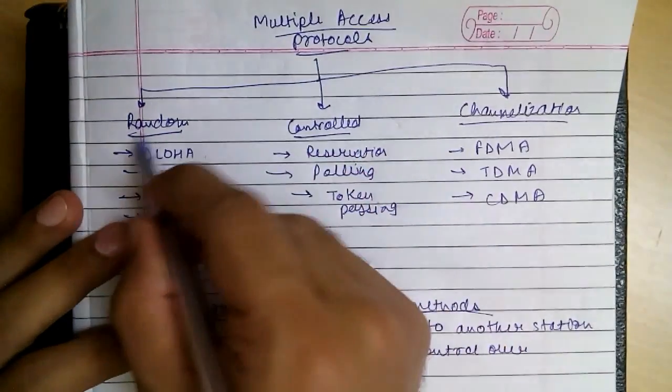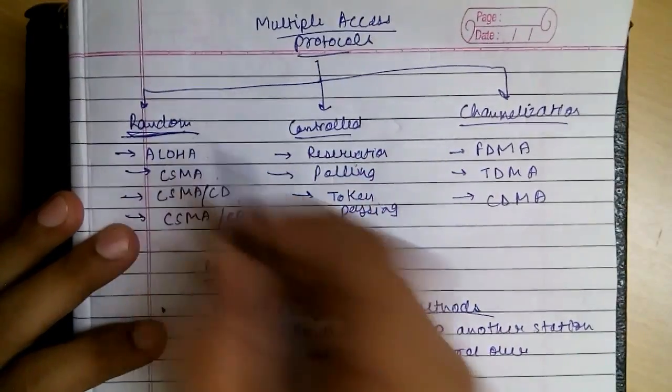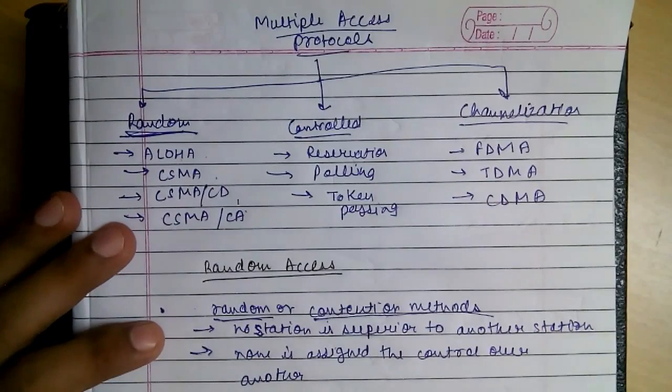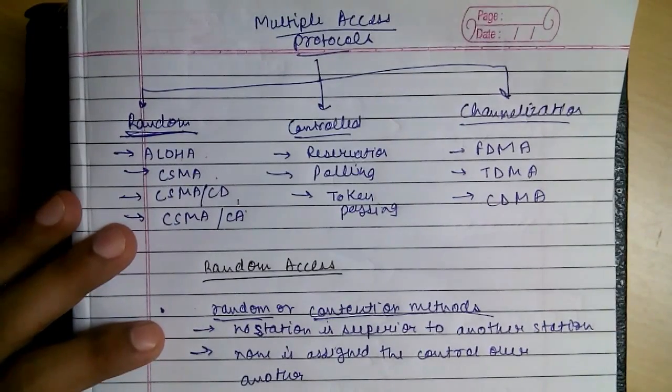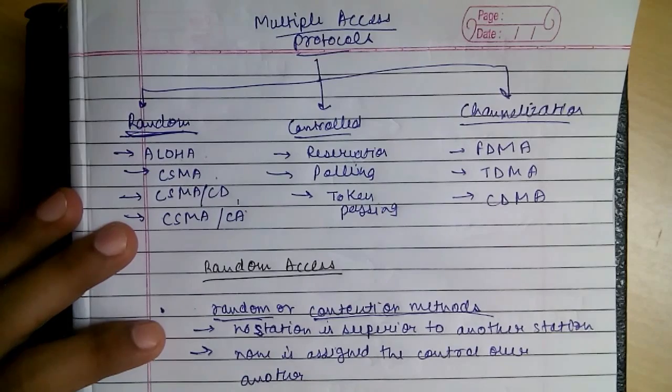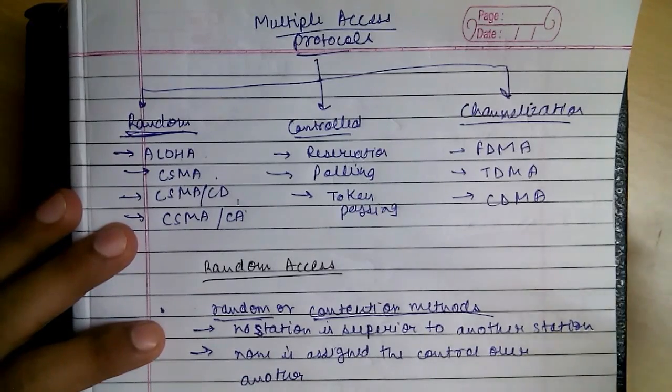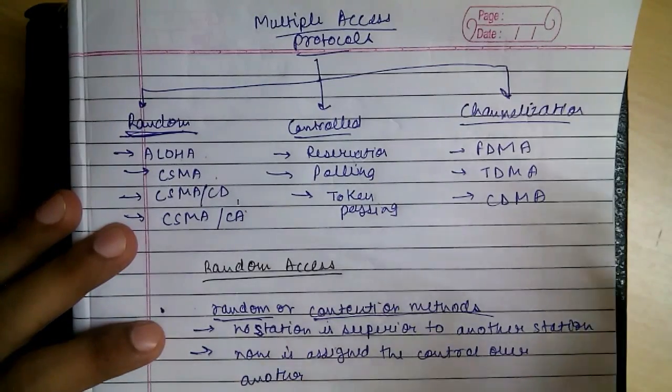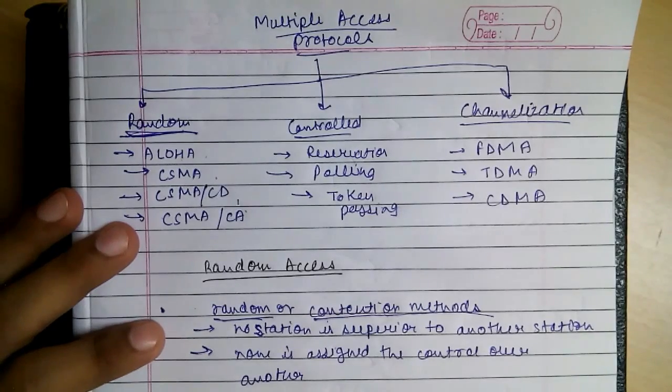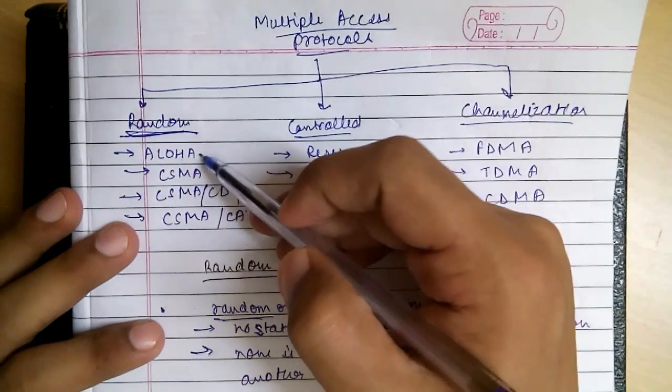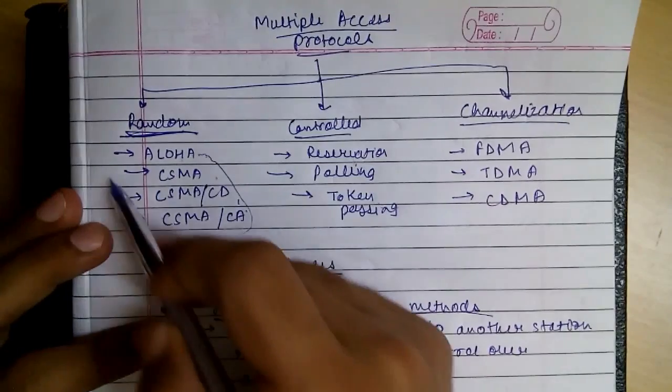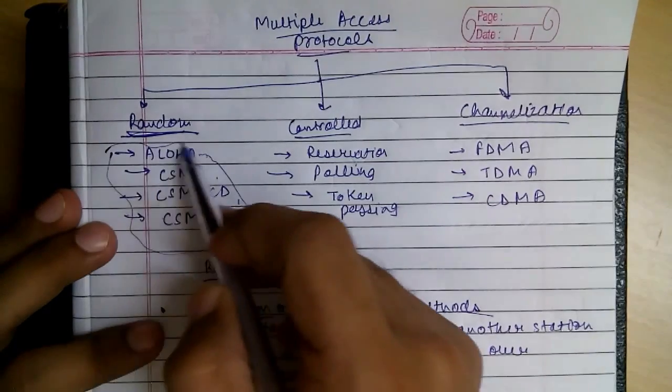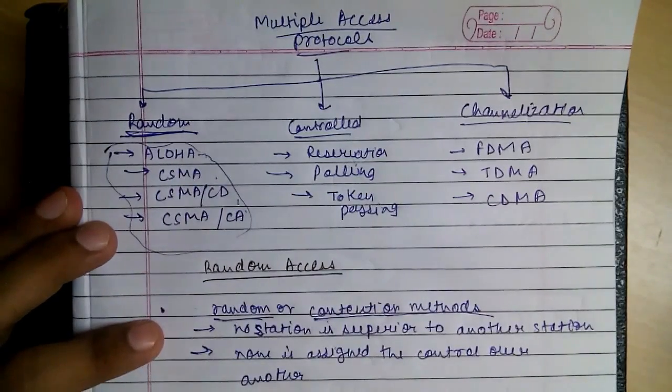The next four protocols we will be discussing are from this random access category, in which the stations do not have control over one another and there is no scheduled time. These four protocols are of the random category, and we will be discussing them in future videos.